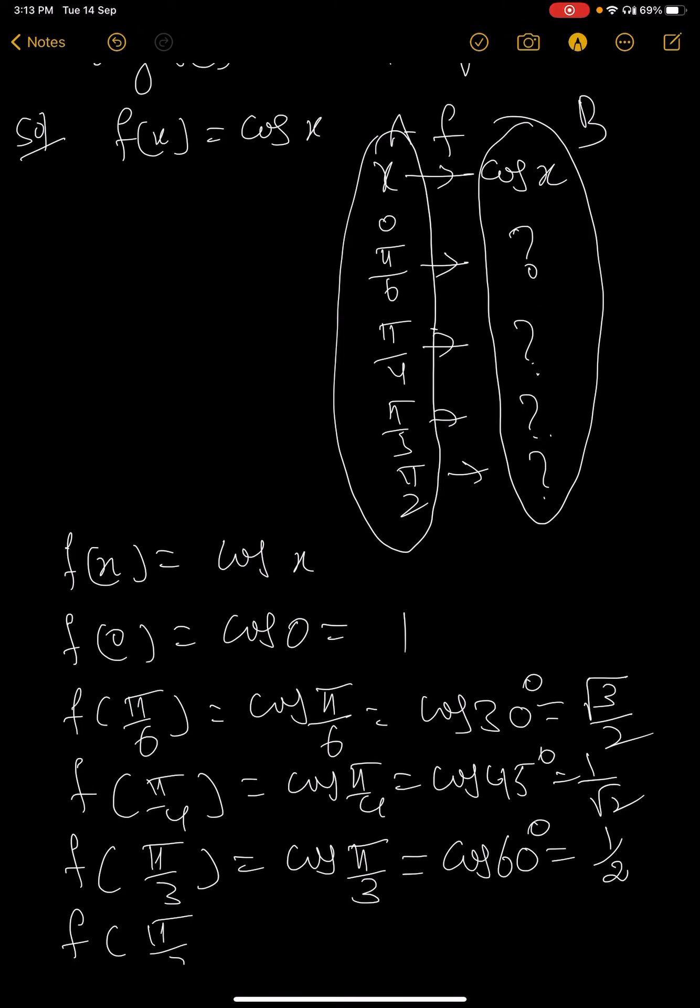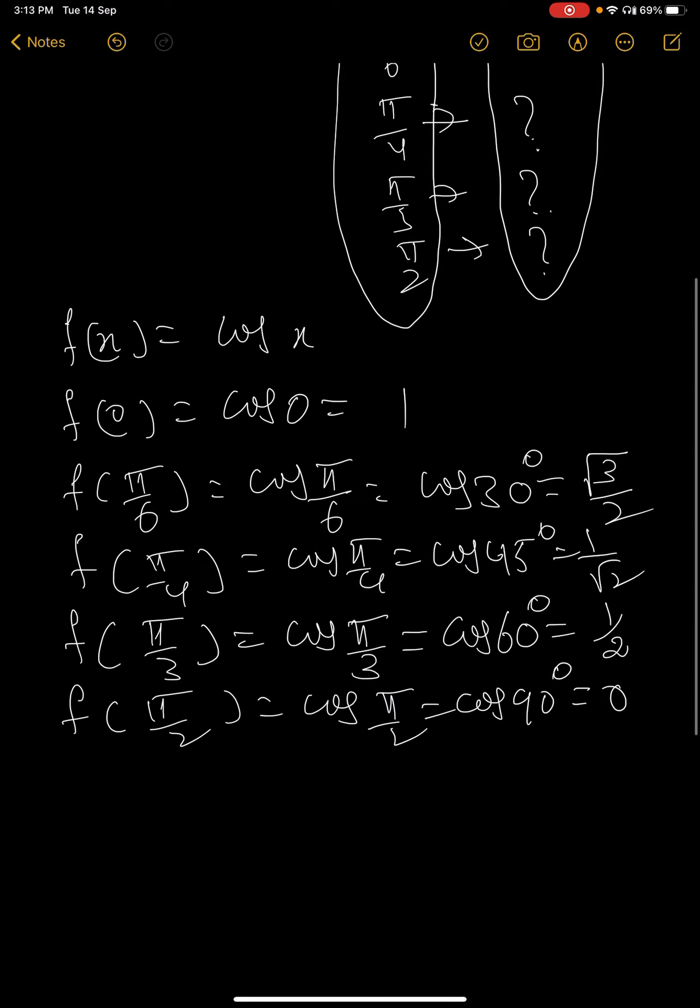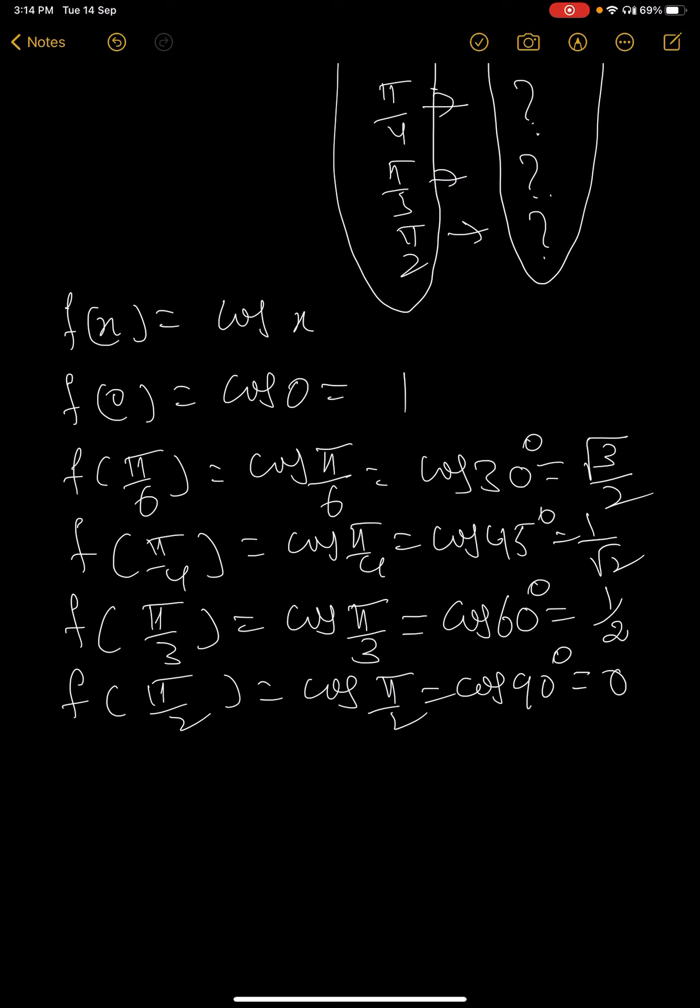f(π/2) = cos π/2 = cos 90° = 0. So the functional value is here, that B is equal to what we have: 1, √3/2, 1/√2, 1/2, 0. These are the values.